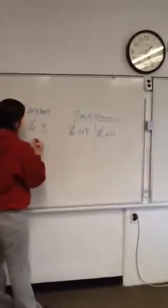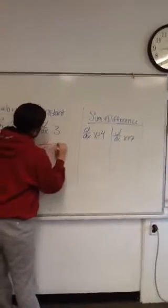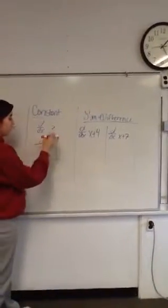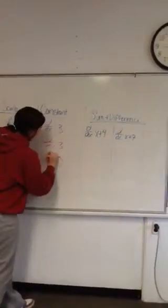Go over to constant. Constant is the easiest of them all. d/dx of 3. All you do is, any constant is 0. The derivative of 3 is 0.